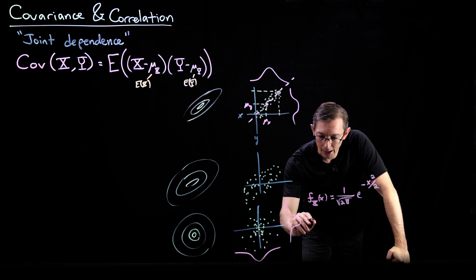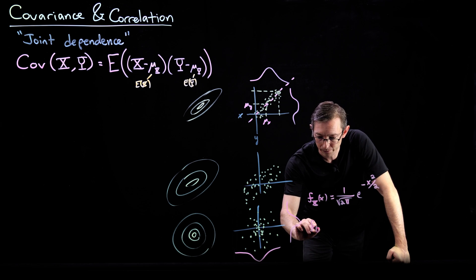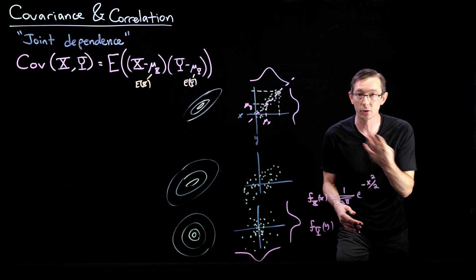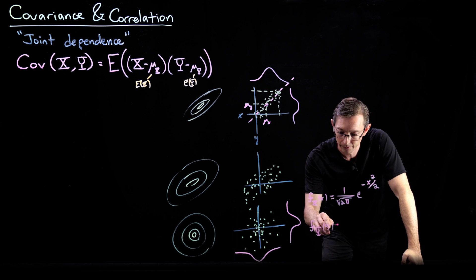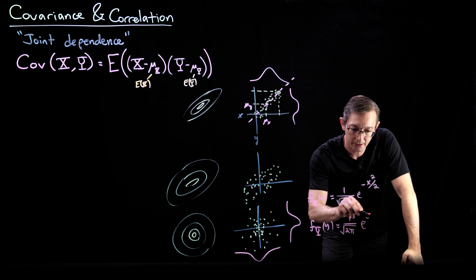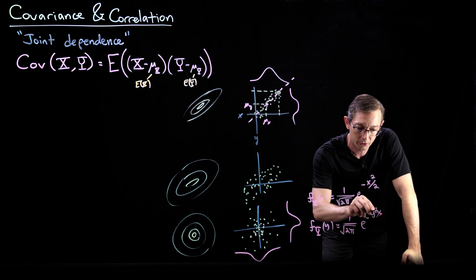And let's say that fy, the distribution of my y variable, is the exact same. It's a unit normal Gaussian centered at zero. This would be 1 over root 2 pi e to the minus y squared over 2.